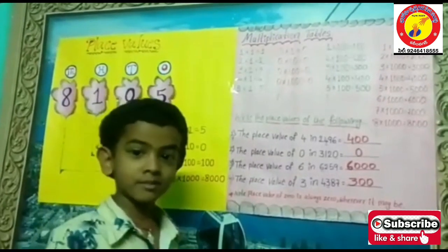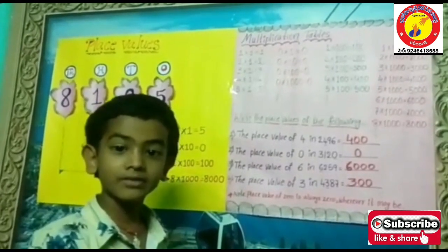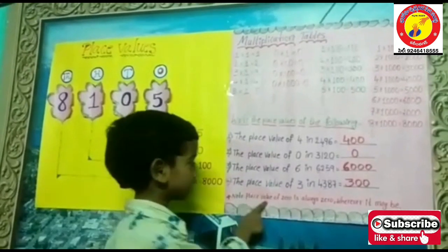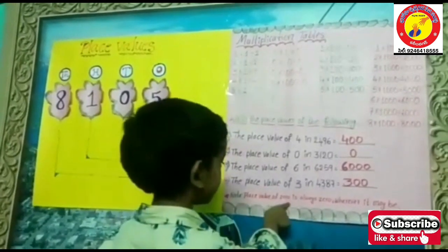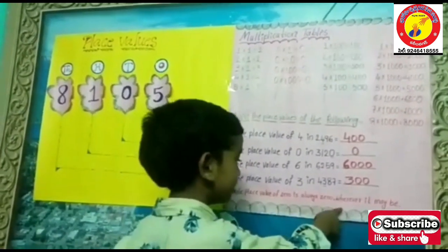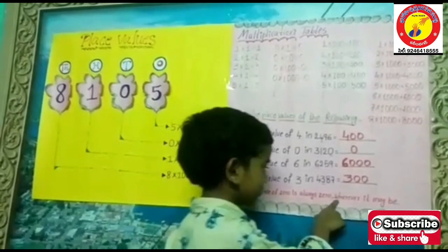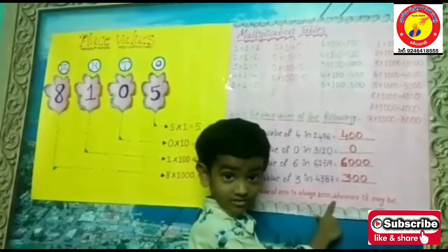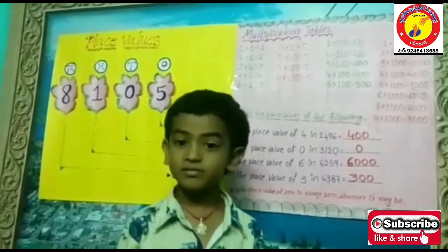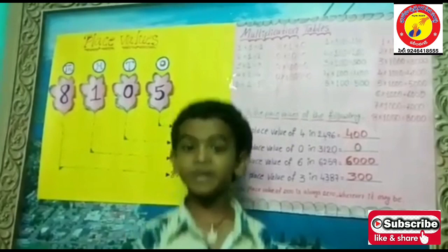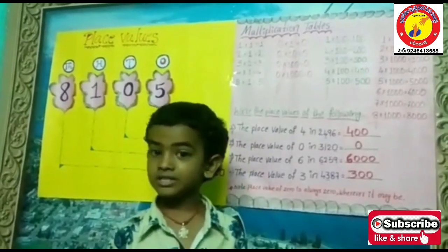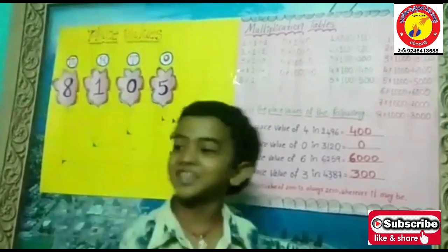Friends, remember one thing: the place value of zero is always zero, wherever it may be. Why? Because zero means nothing, and nothing means zero.